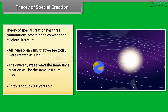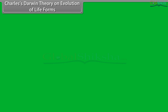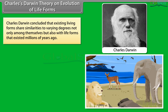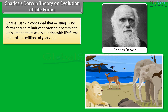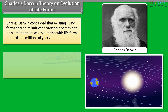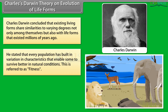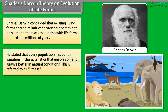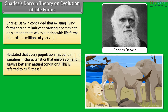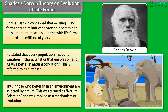Charles Darwin concluded that existing living forms share similarities to varying degrees, not only among themselves but also with life forms that existed millions of years ago. He stated that every population has built-in variation in characteristics that enabled some to survive better in natural conditions — this is referred to as fitness. Those who better fit in an environment are selected by nature, termed natural selection, and implied as a mechanism of evolution.